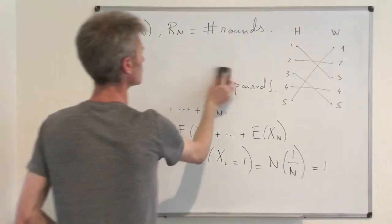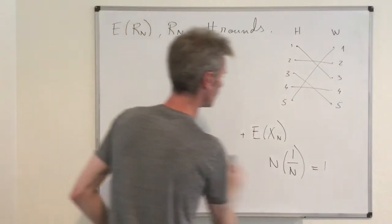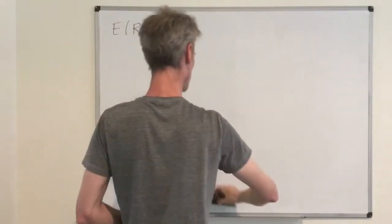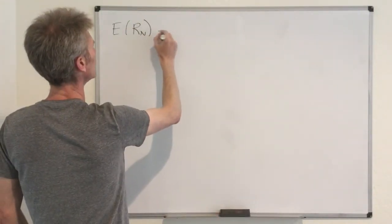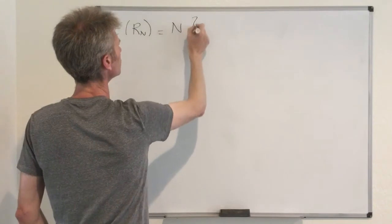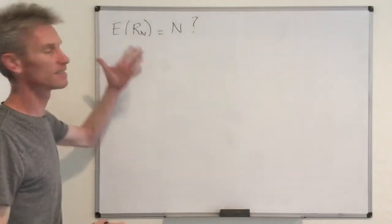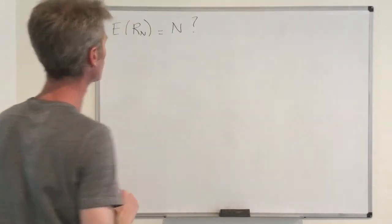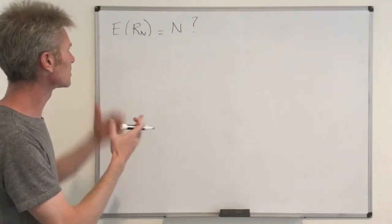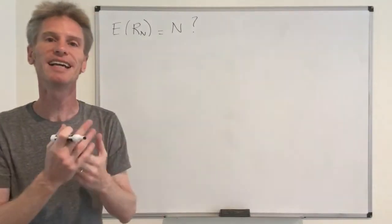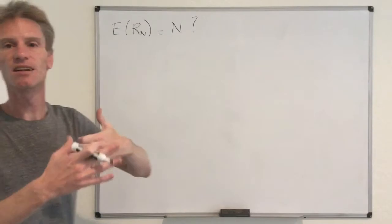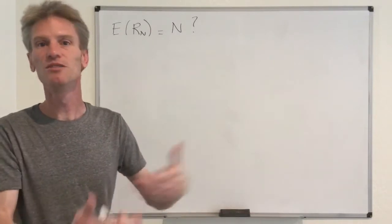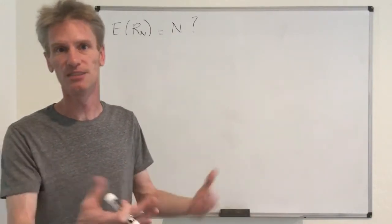From this we guess that the expected number of rounds Rn needed to match all couples should be n. That's our conjecture — E[Rn] = n — and the next step is to prove it rigorously. We remember that Rn is the number of rounds, and now I'm going to introduce the relevant random variables.